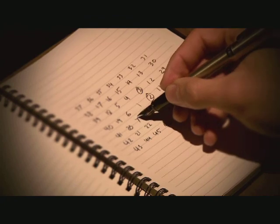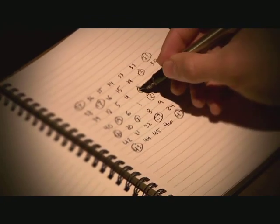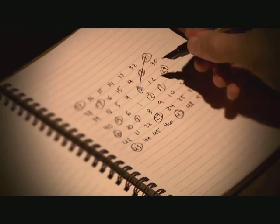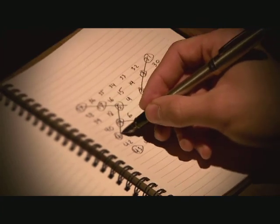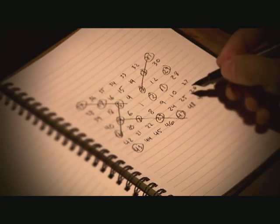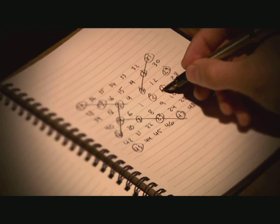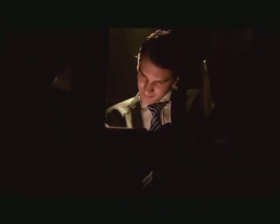He then circled all of the prime numbers and an unexpected pattern emerged. To his surprise, the circled numbers tended to line up along diagonal lines, or as Ulam more carefully pronounced, it appears to exhibit a strongly non-random appearance.